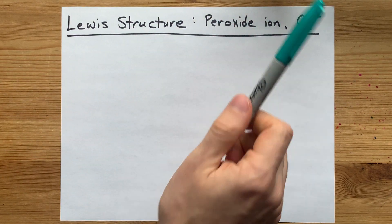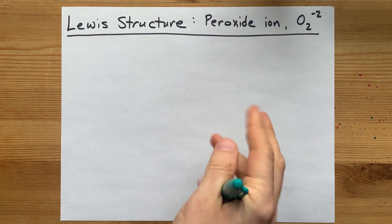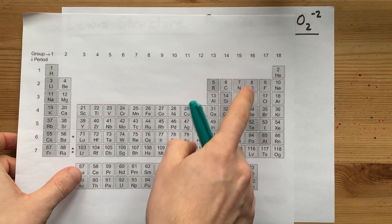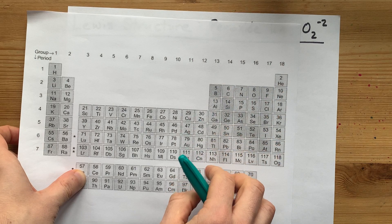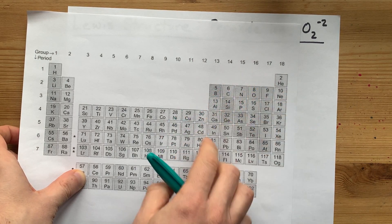Drawing the Lewis structure for the peroxide ion is going to take a little bit of finesse. Oxygen is a non-metal on the right-hand side of this darkened staircase on the periodic table.